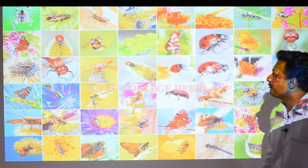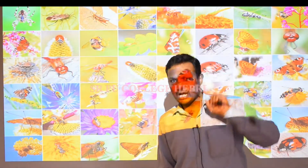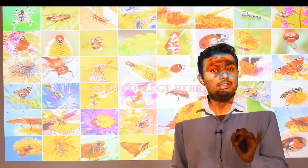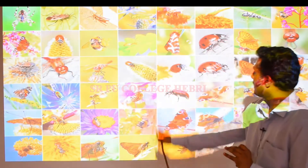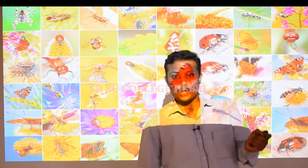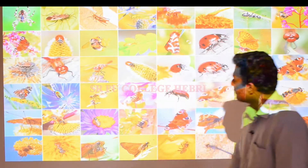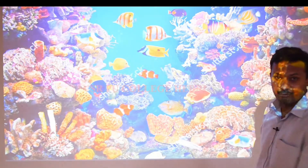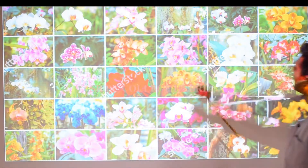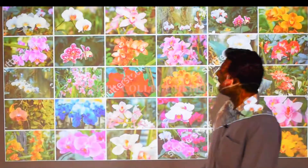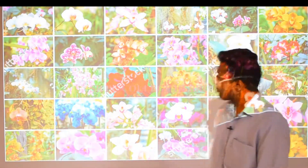Just to take account of how diversified the earth is: there are around 20,000 species of ants, around 3 lakh species of beetles, around 28,000 species of fishes, and also around 20,000 species of orchids. These numbers give us an idea of how diverse life on Earth really is.